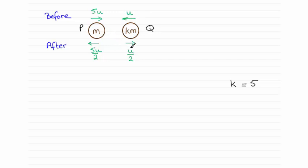Now when they collide, they then reverse direction and they end up going at half the speed that they're originally going with. So I've marked that in for p as 5u over 2 and for q as u over 2.